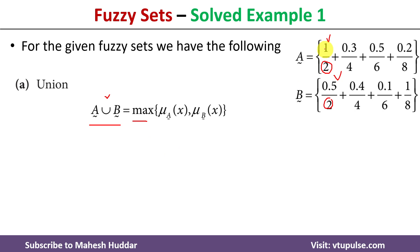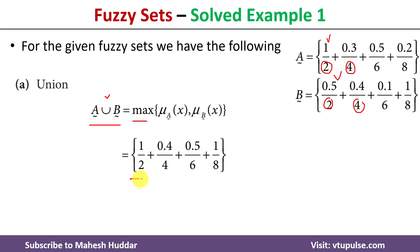So, the degree of membership of 2 in the union is 1. Similarly, for element 4, the degree of membership in fuzzy set A is 0.3 and in B is 0.4. Since 0.4 is more than 0.3, the degree of membership of 4 in the union is 0.4, and so on. This is how the union of two sets looks.